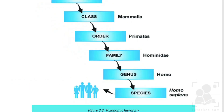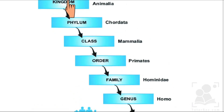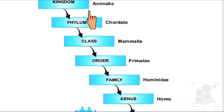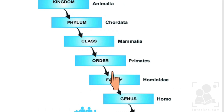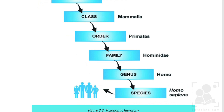The taxonomic hierarchy for humans is: Kingdom Animalia, Phylum Chordata, Class Mammalia, Order Primates, Family Hominidae, Genus Homo, and Species Homo sapiens. Species is the most basic level, and kingdom is the broadest level of this classification hierarchy.